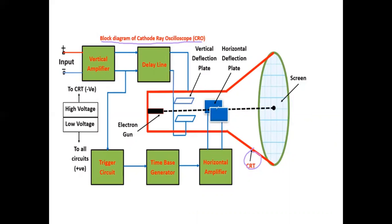The delay line will generate a delay. Second, this is your triggering circuit, which will generate the trigger pulses. This will be given to the time-based generator, and according to that, the time period of the waveforms will be generated. After that, the horizontal amplifier amplifies the signal horizontally, and this will be given to the horizontal deflection plate.